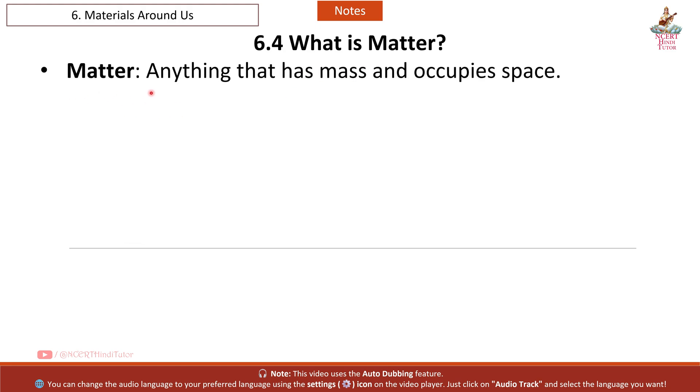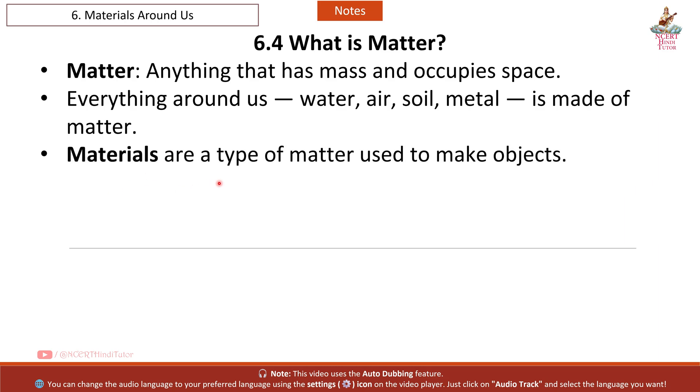6.4 What is Matter? Matter: anything that has mass and occupies space. Everything around us: water, air, soil, metal is made of matter. Materials are a type of matter used to make objects.